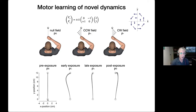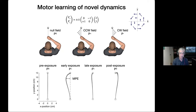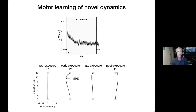Here are some examples of movements. In P0, there are nice straight-line movements. If you apply the P plus field early on, you see people are perturbed to the left and they correct during the movement to get to the target. After experiencing it for maybe half an hour, they make nice straight-line movements in P plus. And if we suddenly turn P plus off without telling the subject, we see this after-effect — they now make a curved movement the other way. Participants are learning something about the force field as they experience it.